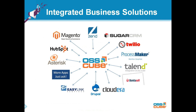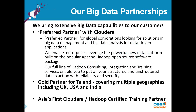One thing that separates OSSQ from other organizations is that we have a broad set of competencies. Our greatest strength is the ability to integrate many applications and open source products into solutions that help you meet your organization's business objectives and differentiate customers from their competition. We are a partner for SugarCRM, Talent — in fact the only partner for Talent in all of India and Asia Pacific — and Magento.